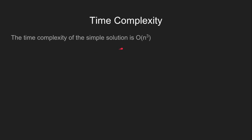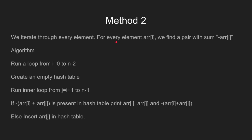The time complexity of the simple solution is O(n³). Let's look at a better solution to this problem using hash tables. In this method, we run a loop from i equal to 0 to i equal to n-2. We create an empty hash table and run another loop from j equal to i plus 1 to j equal to n-1. If negative times the sum of the ith and jth element is present in the hash table, we print the elements. Else, we insert the jth element in the hash table.